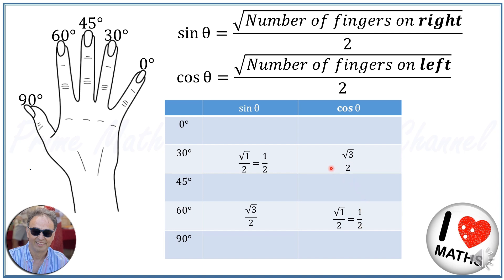Now let's try sine and cosine of 0 degree. 0 degree is this finger. There is no finger on the right hand side, so sine of 0 degree will be square root of 0 over 2, or simply 0. And there are 1, 2, 3, 4 fingers on the left hand side, so cosine of 0 degree will be square root of 4 over 2, or 2 over 2, or simply 1.